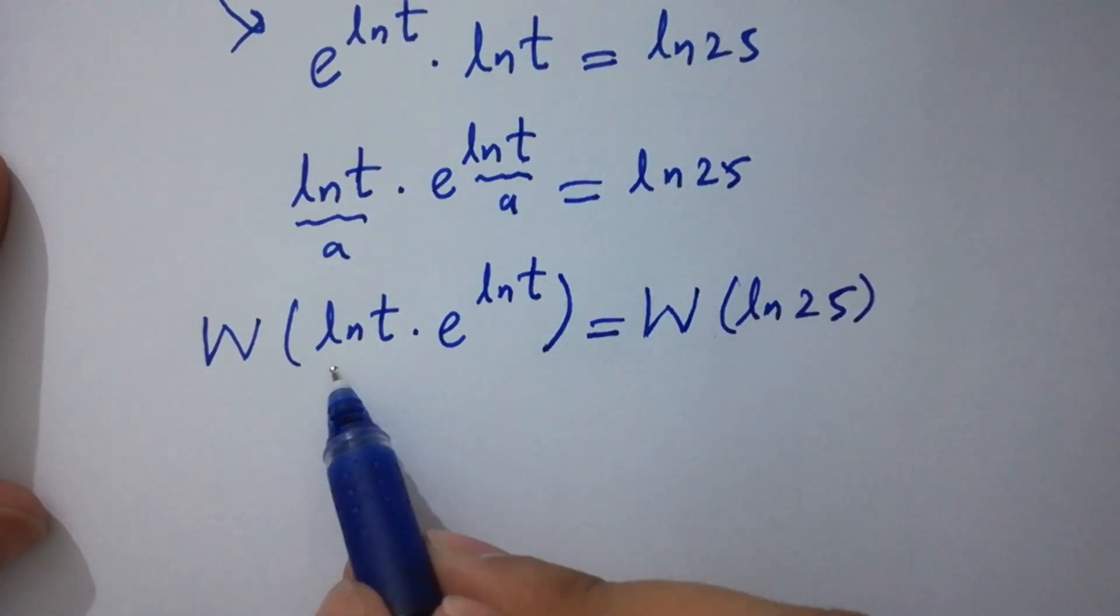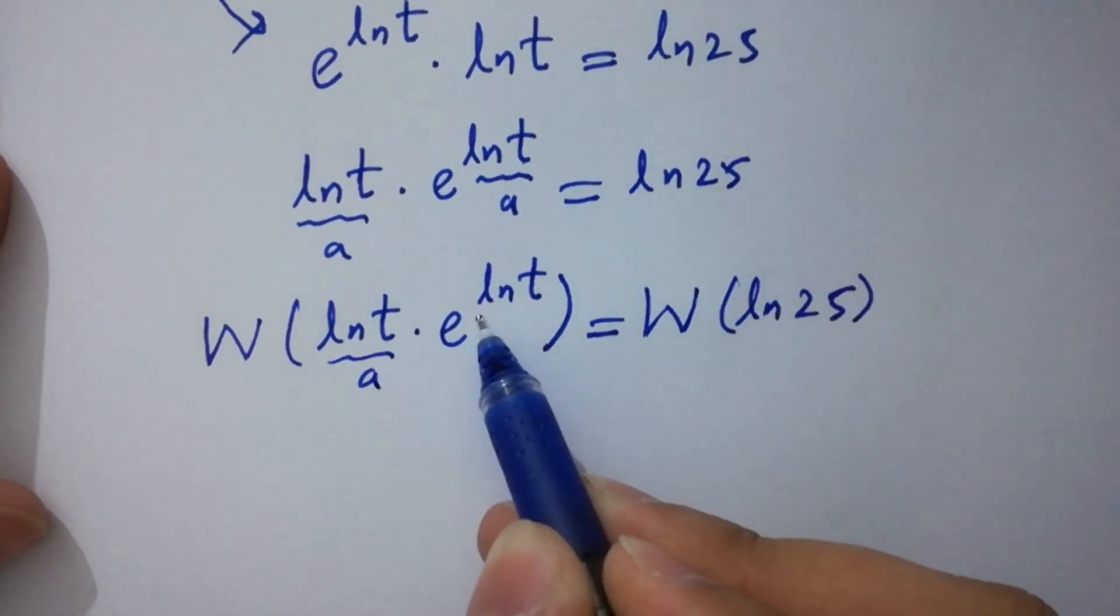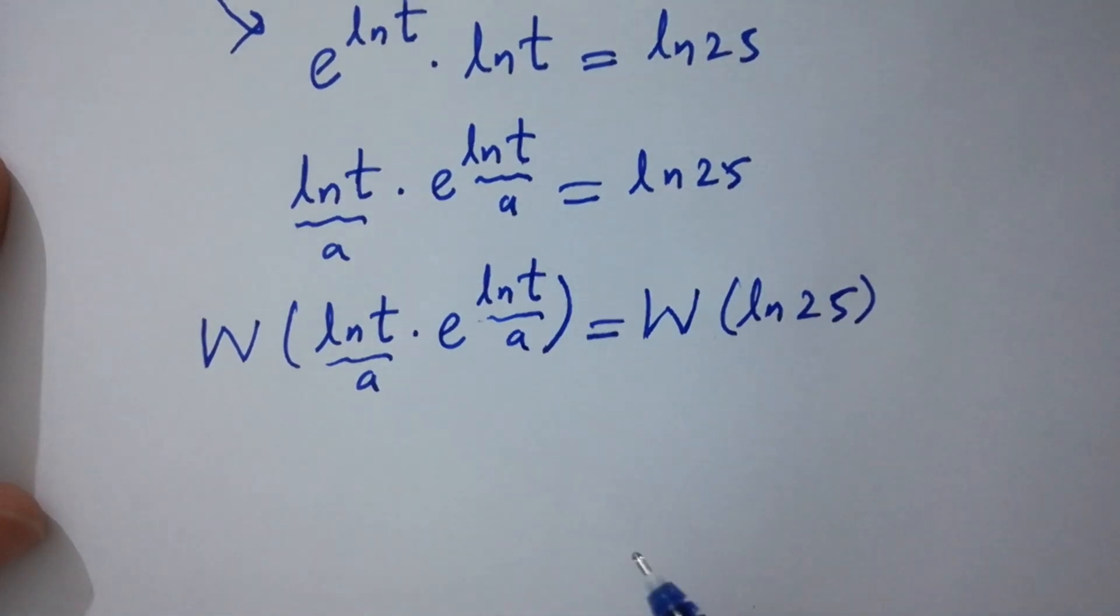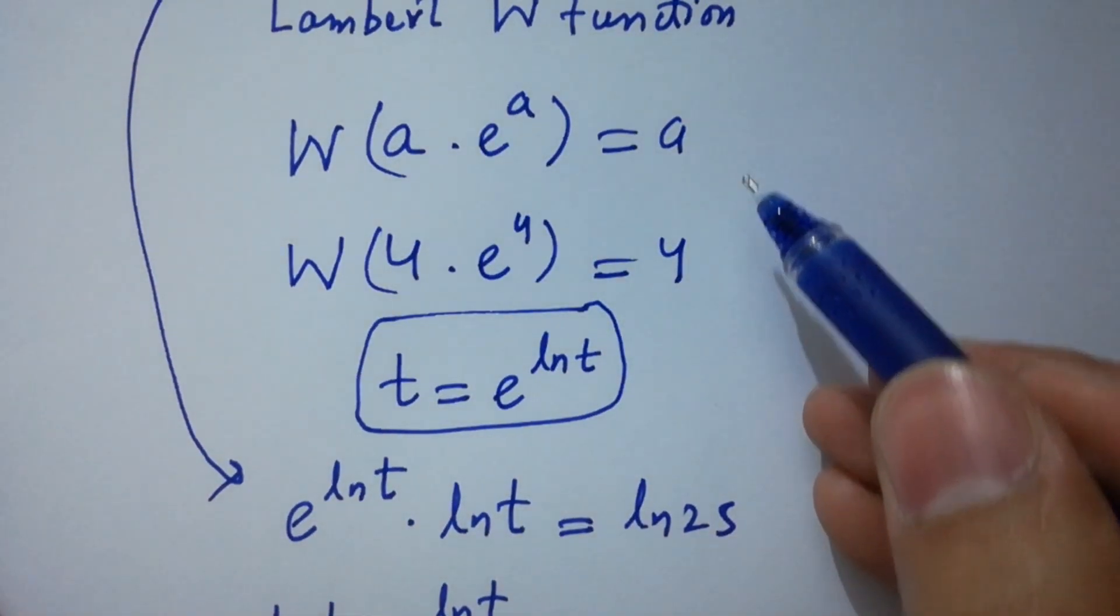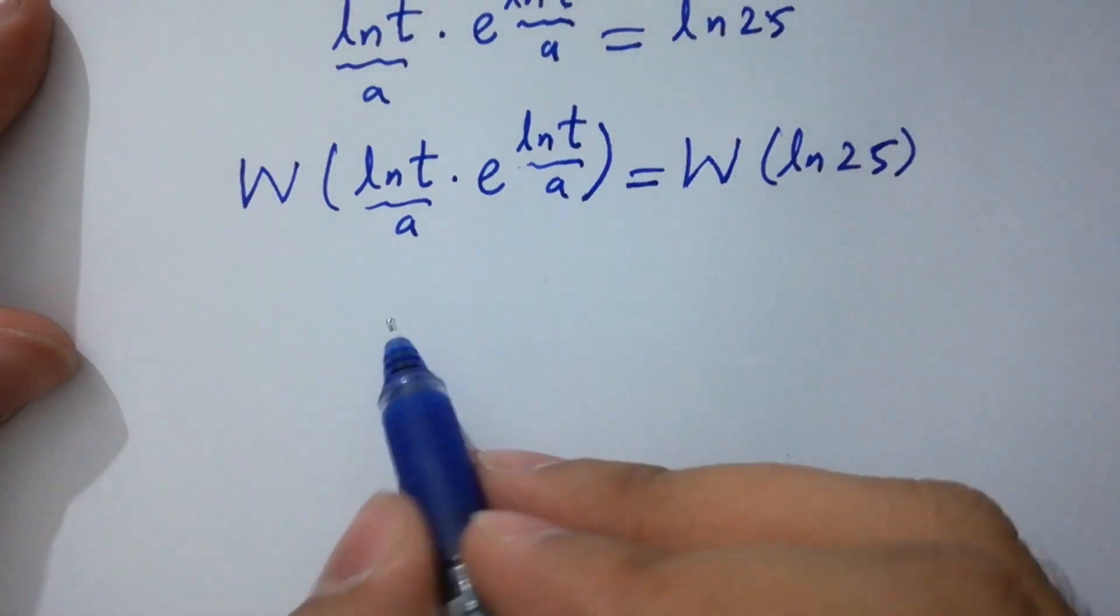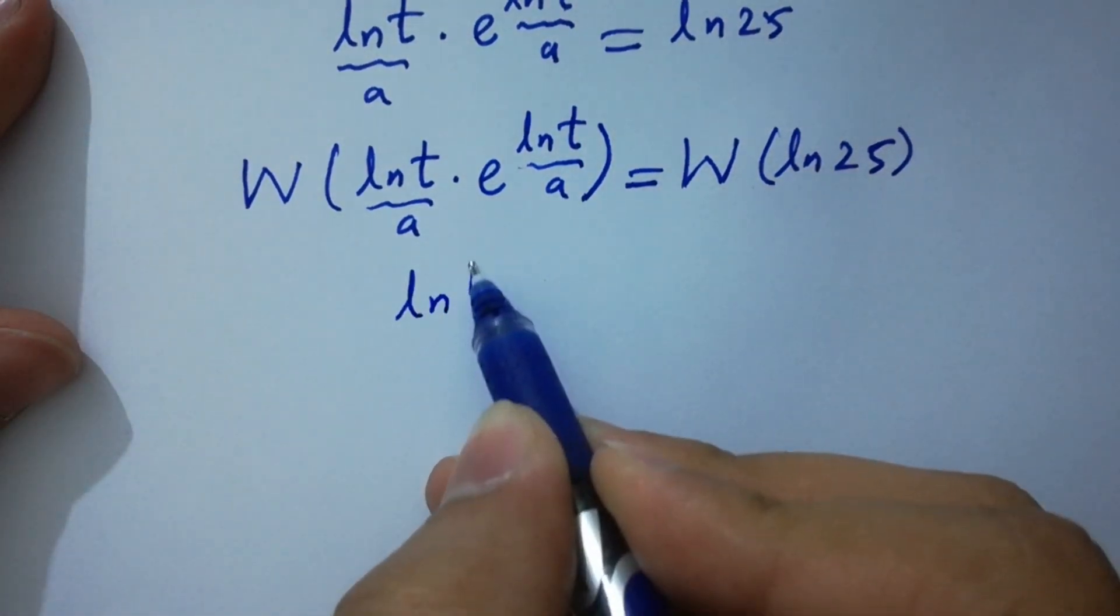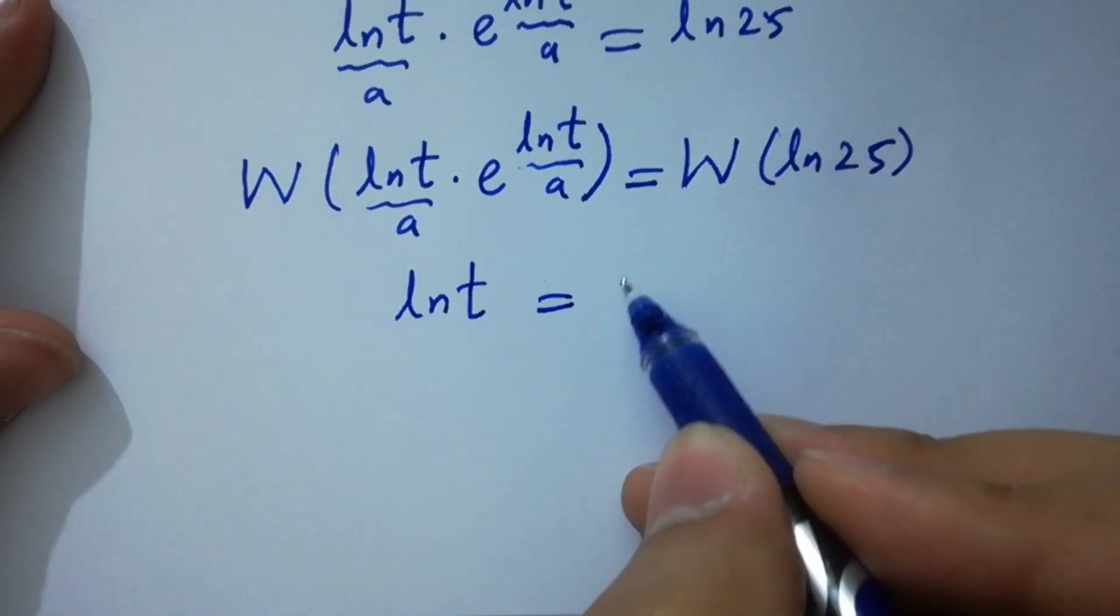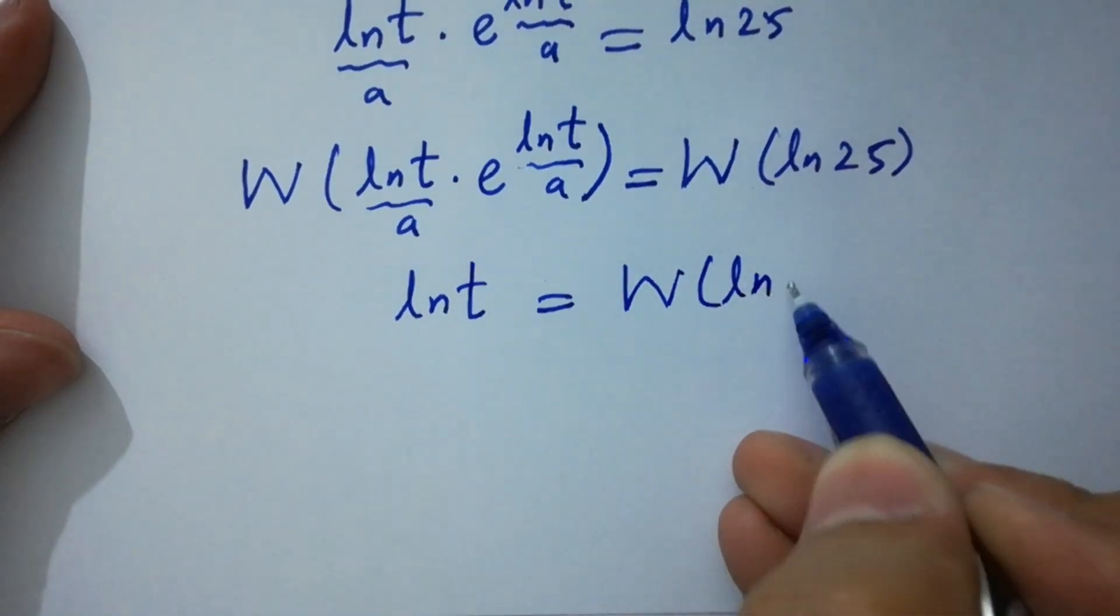So here, W of a times e to the power a will be equal to a. So we have here ln t equals W of ln 25.